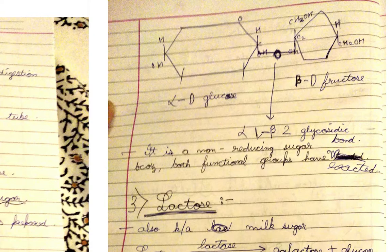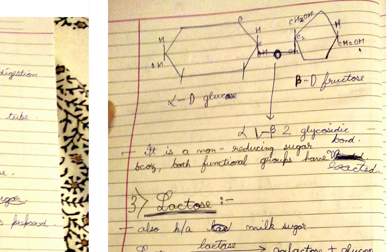Sucrose is a non-reducing sugar because both functional groups have reacted. There is no free OH on the right-hand side — what appears is CH2OH, not a free OH — so sucrose has no free reducing group and is therefore a non-reducing sugar.